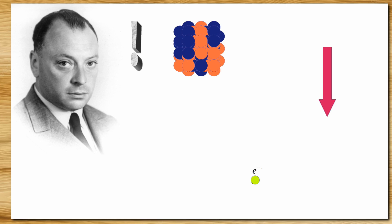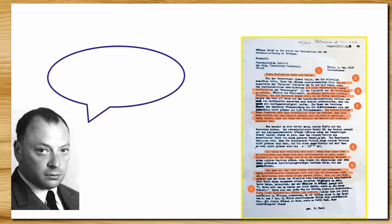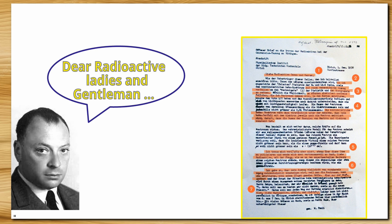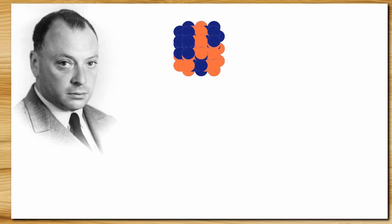But it was mere a hypothesis. Pauli himself knew that it didn't have any experimental probe and hence he wrote a letter to some experimental physicists addressing them dear radioactive ladies and gentlemen. In the letter, he proposed his solution by invoking an unknown particle responsible for continuous beta spectrum.